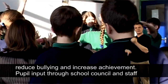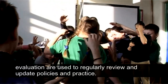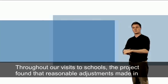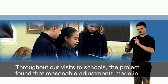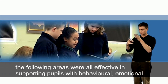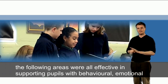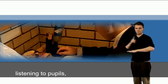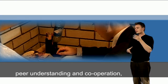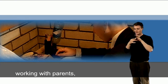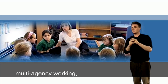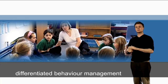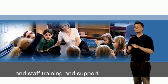Pupil input through school council and staff evaluation are used to regularly review and update policies and practice. Throughout visits to schools, the project found that reasonable adjustments made in the following areas were all effective in supporting pupils with behavioural, emotional and social difficulties: listening to pupils, peer understanding and cooperation, working with parents, multi-agency working, a pleasant physical environment, differentiated behaviour management, and staff training and support.